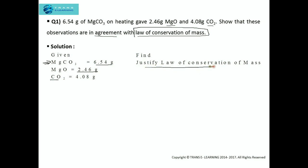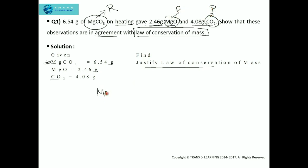We need to justify the Law of Conservation of Mass, so we need to write the equation for this reaction and figure out the reactants as well as the products. 6.54 grams of magnesium carbonate on heating — so magnesium carbonate is the reactant. On heating, magnesium carbonate gave magnesium oxide and carbon dioxide, so these two are the products. The equation will be: magnesium carbonate on heating gives magnesium oxide and carbon dioxide.